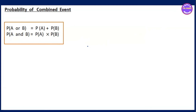Hello everyone, welcome to Grade 10, Chapter 7: Probability of Combined Events. This is the formula for Exercise 7.2 — the formula for the probability of a combined event.